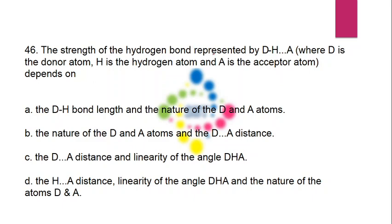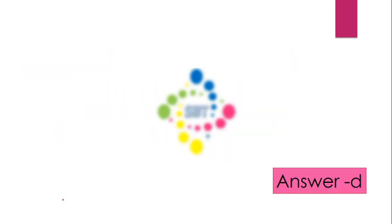The strength of a hydrogen bond represented as D–H···A, where D is the donor atom, H is the hydrogen atom, and A is the acceptor atom, depends on: the hydrogen-to-acceptor distance, the linearity of the angle DHA, and the nature of the donor and acceptor atoms. The degree of polarity also influences bond strength. Correct answer is option D.